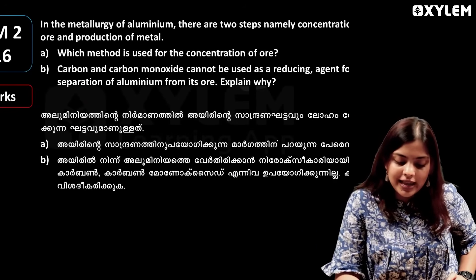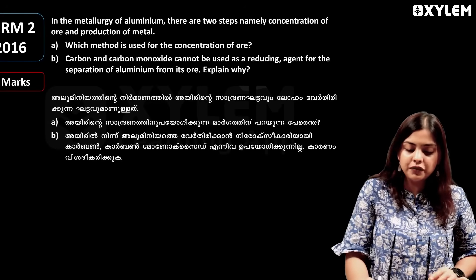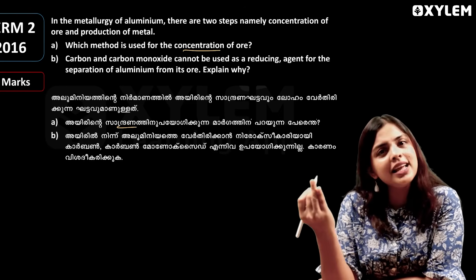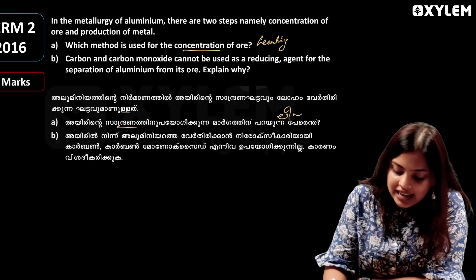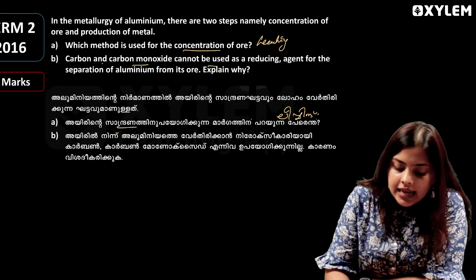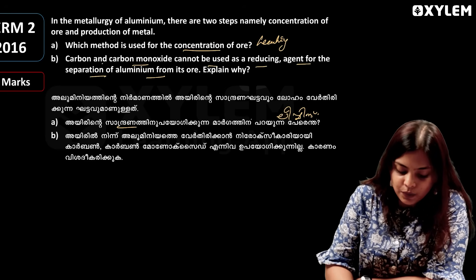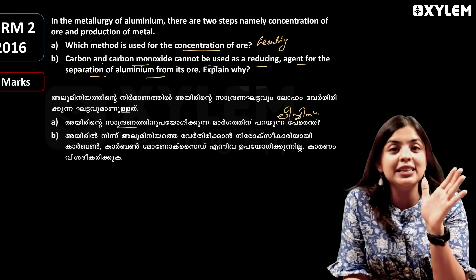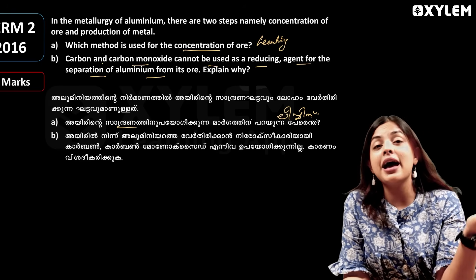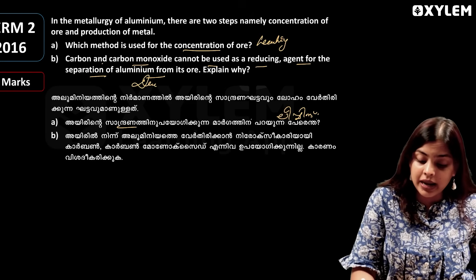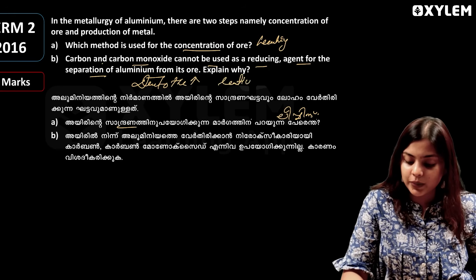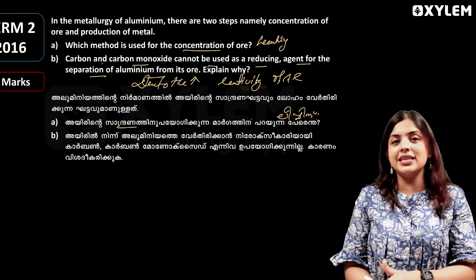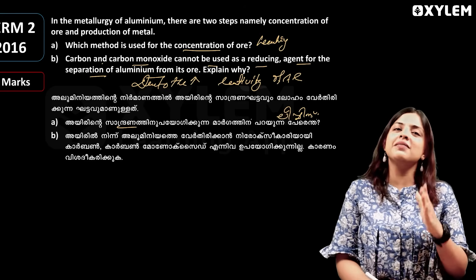Next question: in the metallurgy of aluminum there are two steps — concentration of ore and production of metal. Which method is used for the concentration of the ore? The leaching method is used. In this method, aluminum and iron impurities are separated using carbon monoxide as a reducing agent.